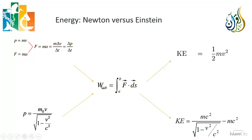In Newtonian physics, to calculate the work done on an object, we take force — defined as the rate of change of momentum with time — substitute it in, and integrate the force over the path along which work is being done. When we do this integration, the kinetic energy of an object falls out to be the famous equation you may remember from high school physics: one half mv squared.